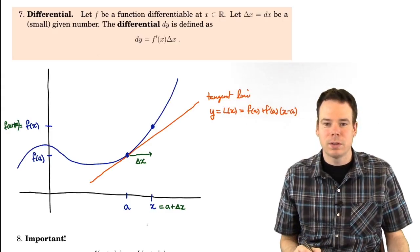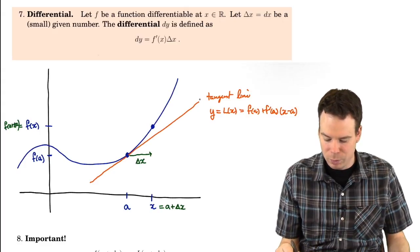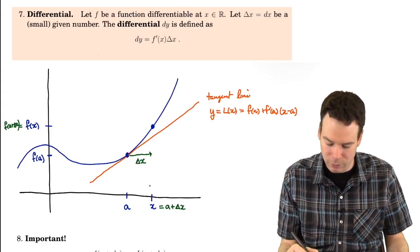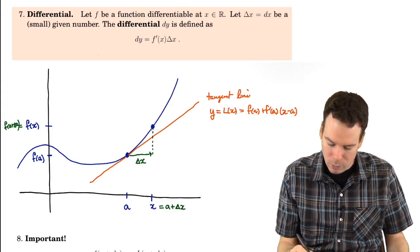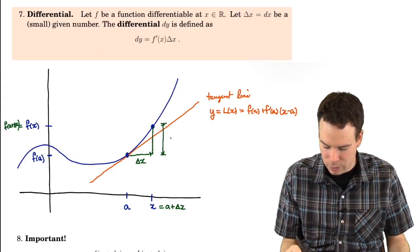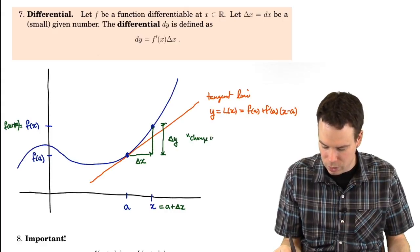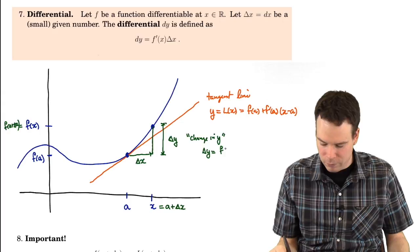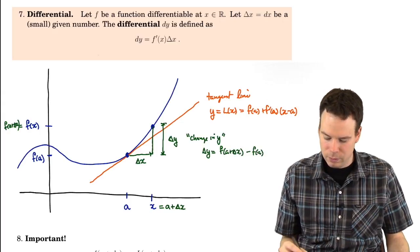If I move over delta x units, how much do I have to move up to get back onto the function? Up in this case, just because our derivative is positive — you could have an analogous picture where the derivative was negative and you'd move down. How much do I have to move up? That's what we've called delta y, or the change in y. And delta y equals f of (a plus delta x) minus f of a.